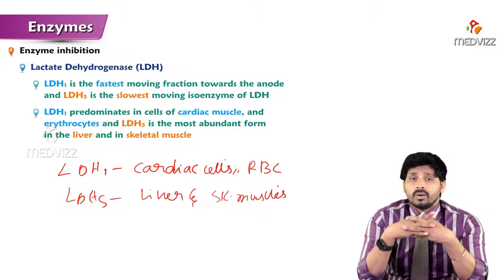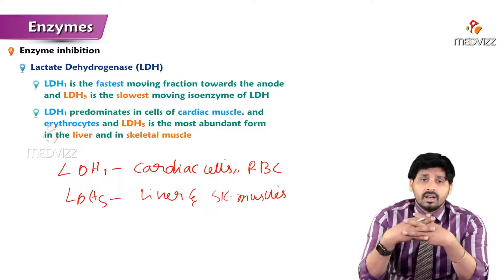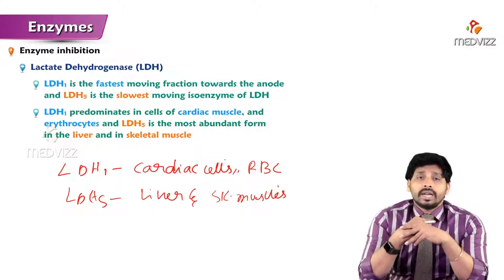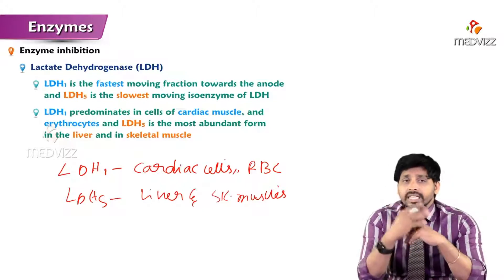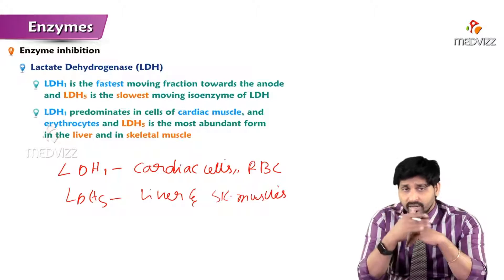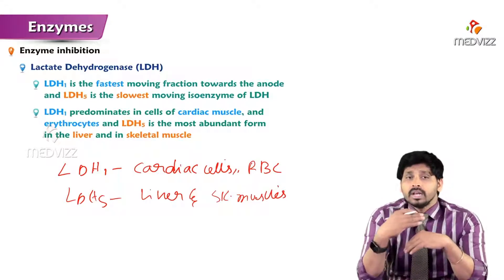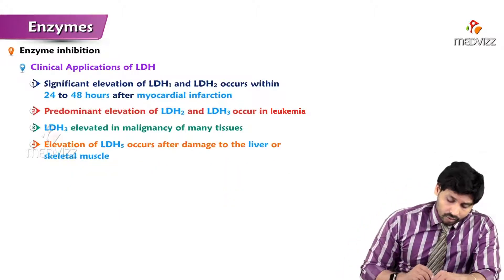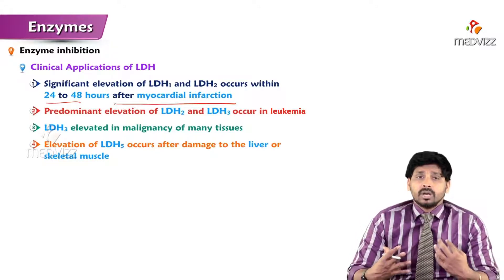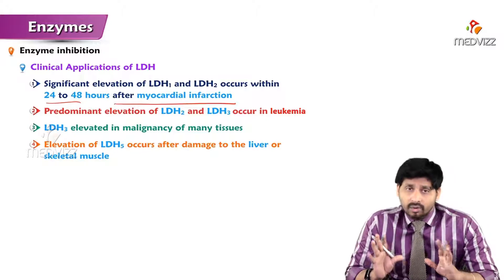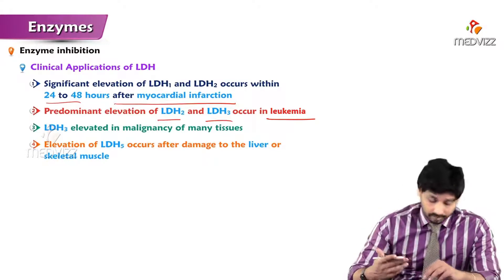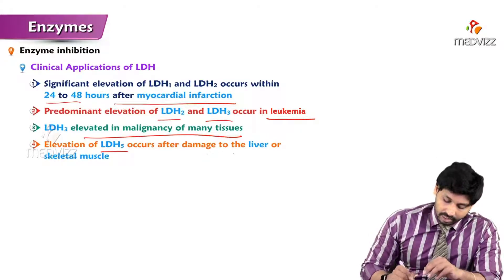In heart diseases such as heart attacks, when cardiac muscle undergoes necrosis, LDH1 comes out of the cardiac cells and appears in large amounts in circulation. By identifying elevated LDH1, we can detect a heart attack. For liver or skeletal muscle problems, elevated LDH5 in circulation indicates the issue. Clinically, LDH1 and LDH2 are elevated within 24 to 48 hours after myocardial infarction. Elevation of LDH2 and LDH3 occurs in leukemia and malignancy, while elevated LDH5 indicates liver or skeletal muscle damage.